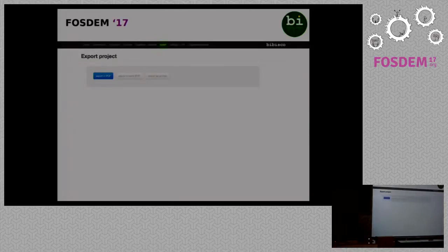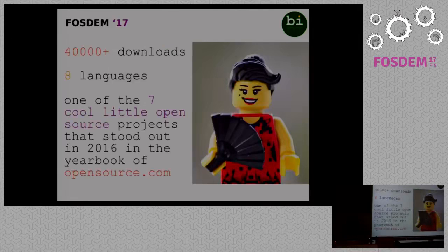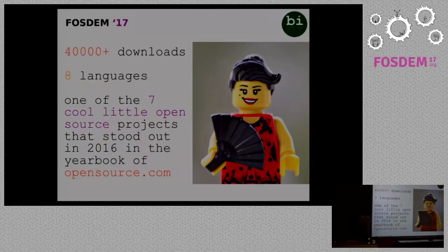Finally, in the export section it's possible to export the novel in PDF, RTF, or as an archive. Some numbers: at the moment Bibisco has more than 40,000 downloads and is translated into eight languages. Bibisco is one of the seven cool little open source projects that stood out in 2016 in the e-book of opensource.com.